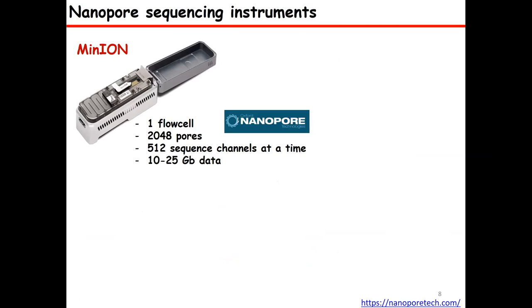I'm going to introduce a few sequencing instruments available from Oxford Nanopore. Here is the MinION, a very famous nanopore sequencing instrument, which holds a single flow cell containing 2,048 pores. You can run this flow cell for up to 48 hours in a single stretch or in multiple rounds. Each time, 512 sequencing channels operate at a time, producing up to 10 to 25 gigabytes.